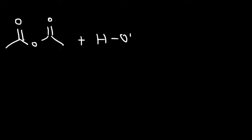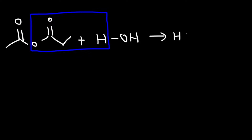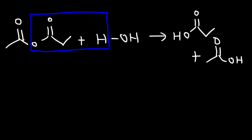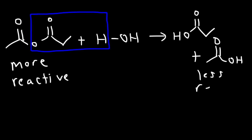Let's take another acid derivative — the acid anhydride — and react it with water. We pair up the leaving group with the hydrogen; using an unsymmetrical anhydride, one part gives propanoic acid and the other gives a second carboxylic acid. Whenever you mix an acid anhydride with water you get two carboxylic acids. Since the acid anhydride is more reactive than the carboxylic acid, this is also a product-favored reaction.